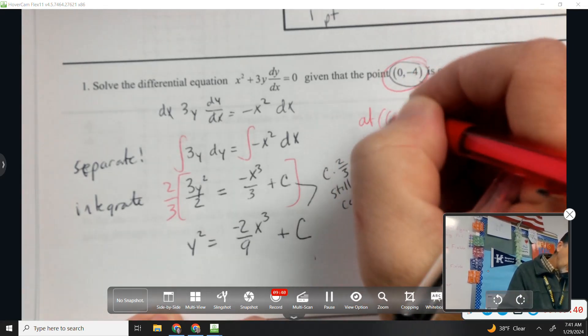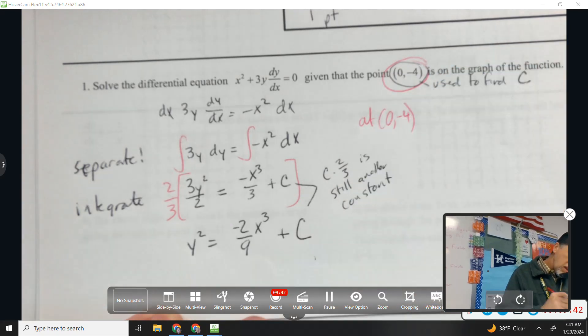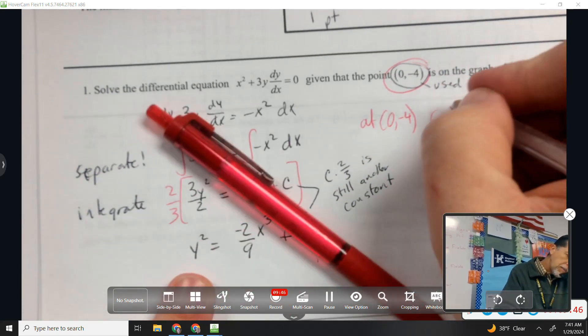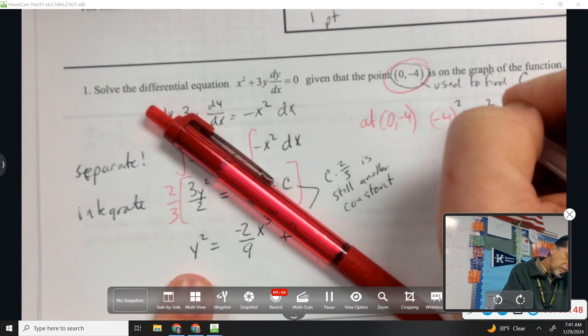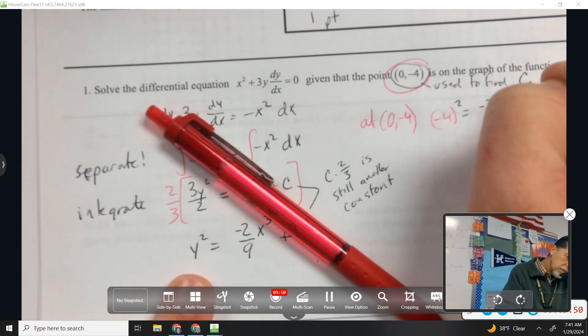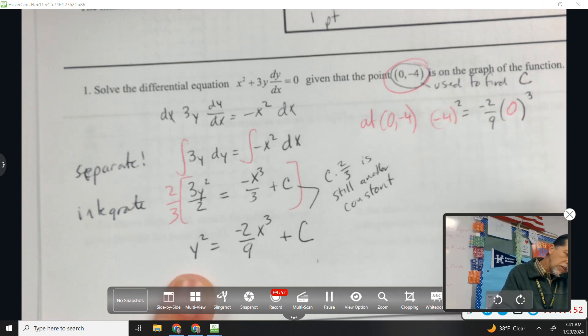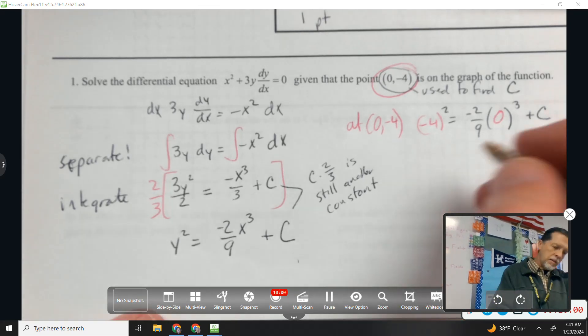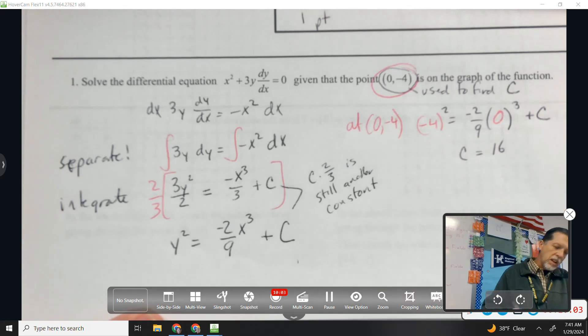Let's use this point now. So 4 goes in for y, 0 goes in for x. That's convenient. That's nice when they do that for us. So C equals 16.